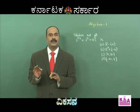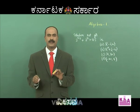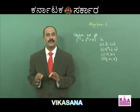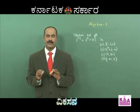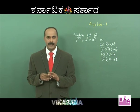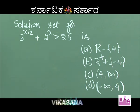Problem 4: This is a CET entrance exam question. There are many opportunities if you avoid heavy calculation. The problem is: Solution set for 3^(x/2) + 2^x > 25. Option A: (−∞, −4). Option B: {−4}. Option C: (4, ∞). Option D: (−∞, 4).